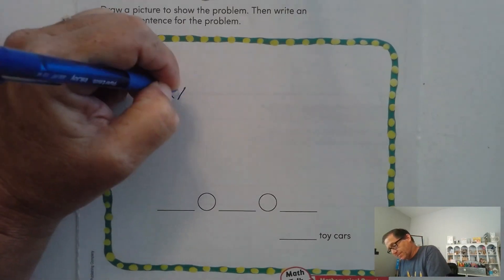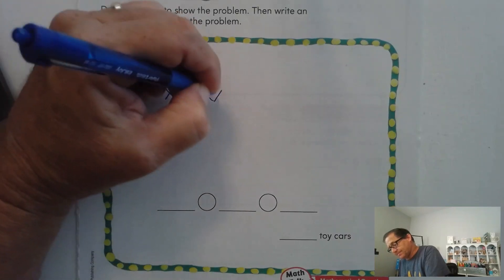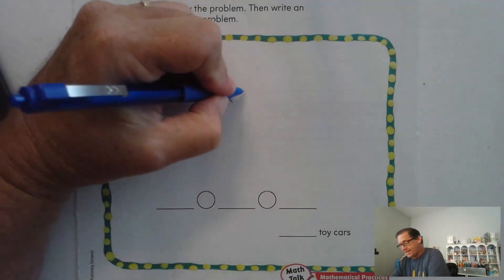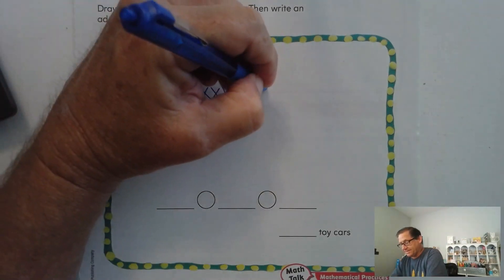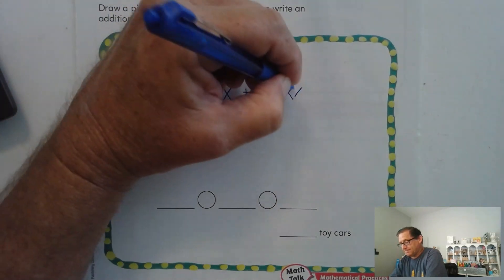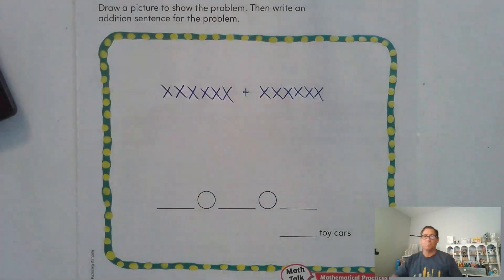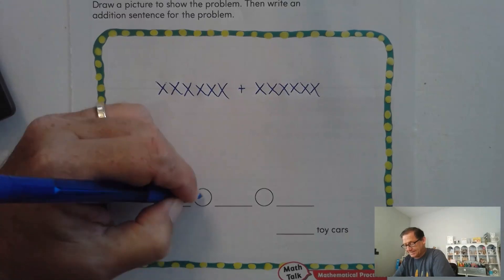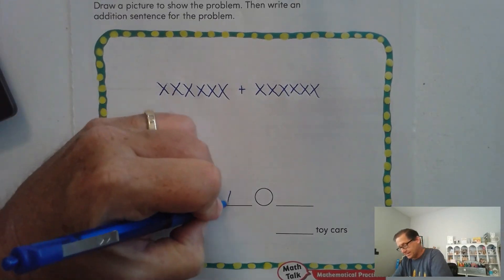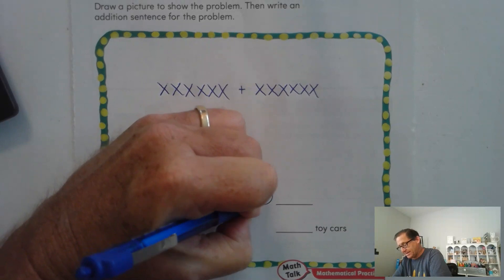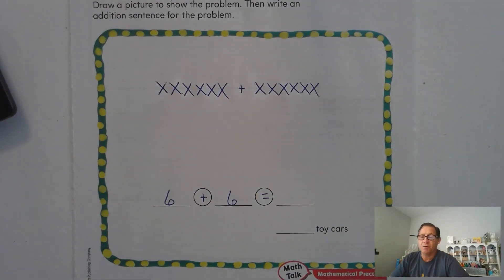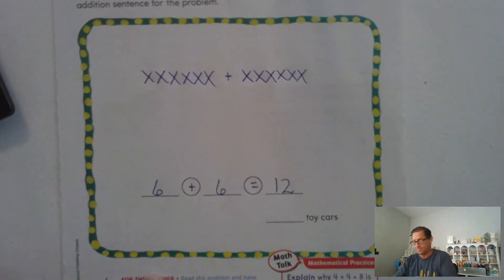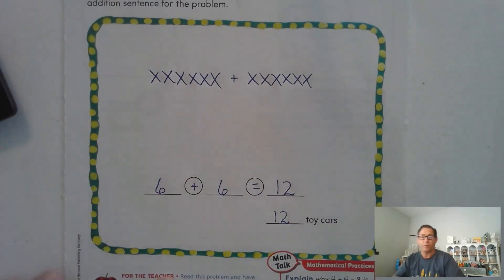Alright. I'm going to start with the 6 cars that he already has, and then Alicia gives him 6 more. What addition problem are we representing here? That's 6 plus 6 equals what? We should be really good with our double facts — 6 plus 6 is 12. So now he has 12 toy cars.